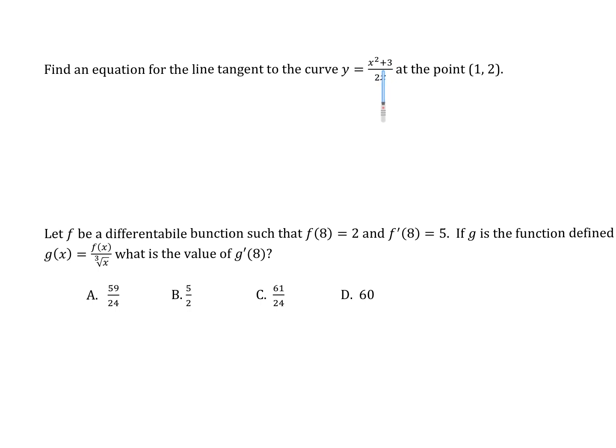Find the equation of a tangent line to this curve at that point. What does that curve even look like? X squared plus three divided by something — divide means I've got to use a certain rule. They want the equation of the tangent line at this point, one two. What will my slope be — positive or negative? It should be negative. Let's go find that slope. How would I find the slope of this function? Got to use the quotient rule because there's division.